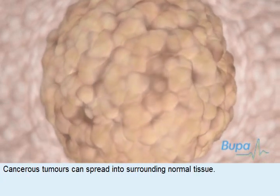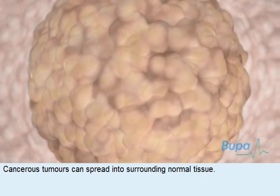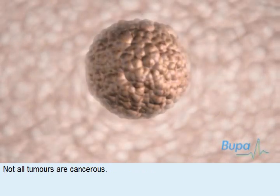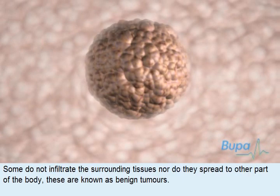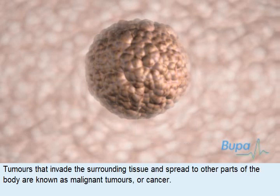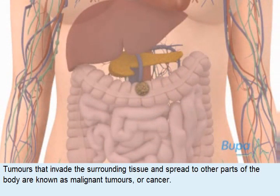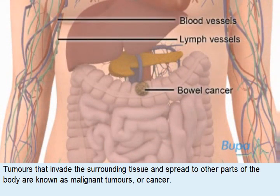Cancerous tumours can spread into surrounding normal tissue. Not all tumours are cancerous. Some do not infiltrate the surrounding tissues, nor do they spread to other parts of the body. These are known as benign tumours. Tumours that invade the surrounding tissue and spread to other parts of the body are known as malignant tumours, or cancer.